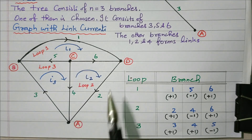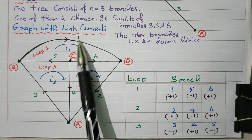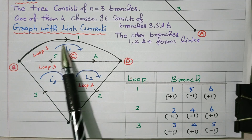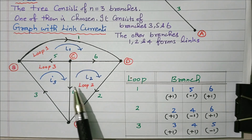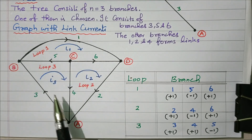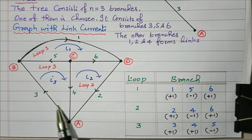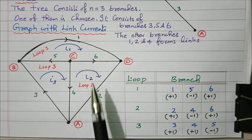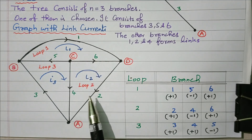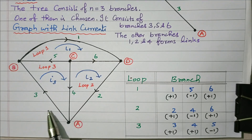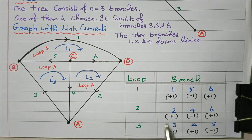The graph with the link currents is now drawn. The tree consists of branches three, five and six. Branches one, two and four form the links. Tree with the link current is called a graph with link current set — a tie set. There are three loop currents: i1, i2, i3. Loop one contains branches one, five and six. Loop two contains branches two, four and six. Loop three contains branches three, four and five.